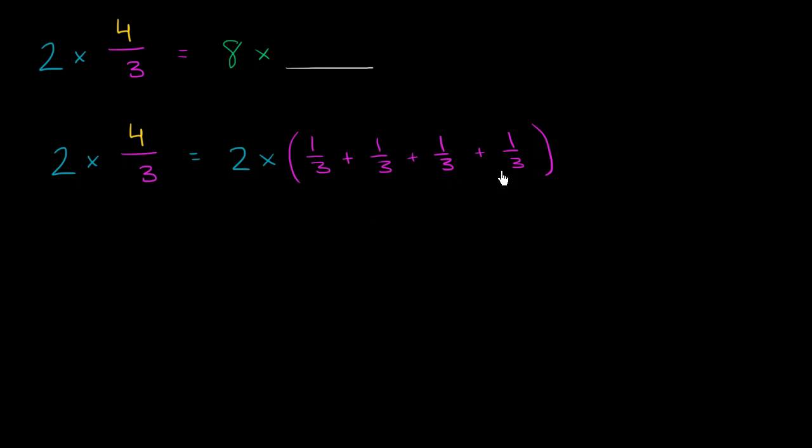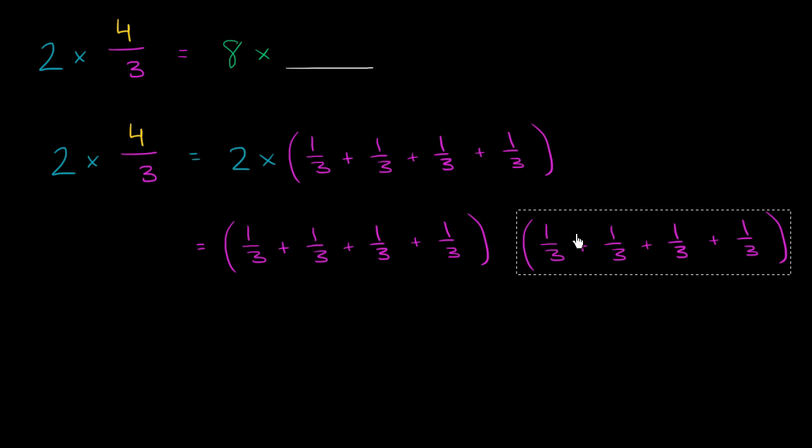Now what would this be? Well this is going to be equal to, let me just copy and paste this. It's going to be this two times. So copy and then let me paste it. So that's one group of those 1 thirds, of those four 1 thirds, or one group of one of these 4 thirds. And then we'll have another one, and we're going to add them together. That's literally 2 times 4 thirds.